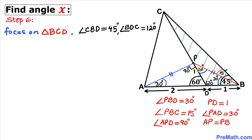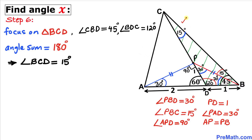Next, let's focus on triangle BCD. We know that angle B is 45 degrees and angle BDC is 120 degrees. Since the sum of angles in any triangle is 180 degrees, angle BCD is going to be 180 minus 45 minus 120 equals 15 degrees.